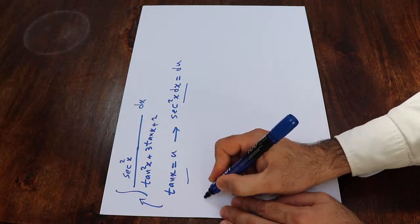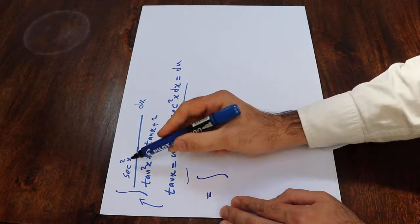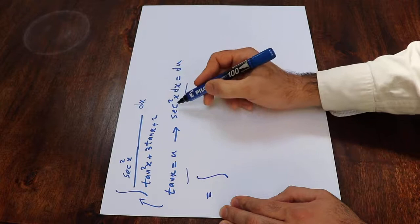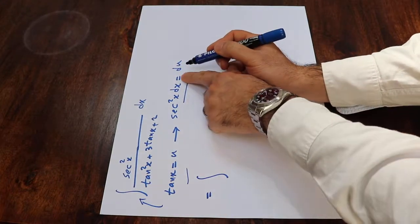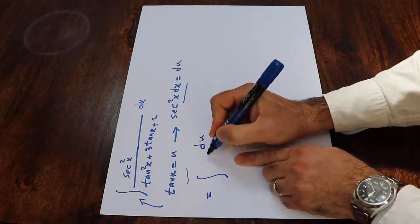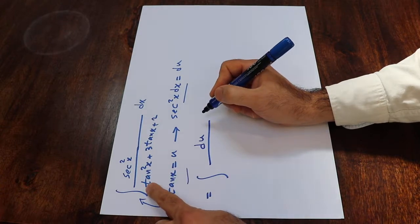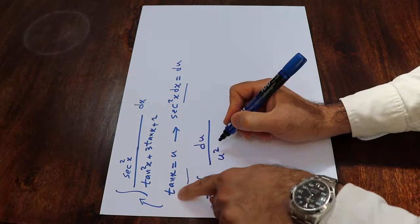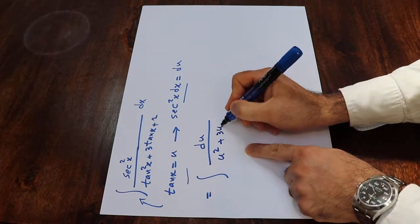And if you do that, you get that will be equal to integral of, instead of secant square x dx, here I have secant square x dx. I simply write du, and then instead of tangent square x, I write u squared, because tangent x is u, plus 3u, plus 2.